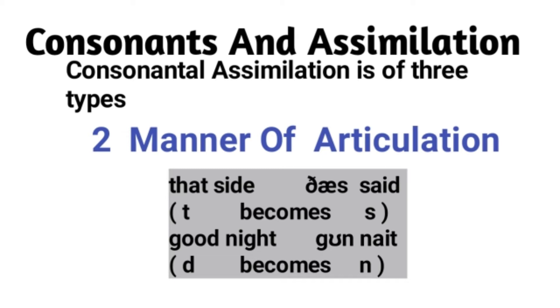Another example of manner of articulation assimilation is 'good night.' In rapid, quick, or connected speech it will become 'goon night' — D becomes N. Both share a similar manner of articulation.